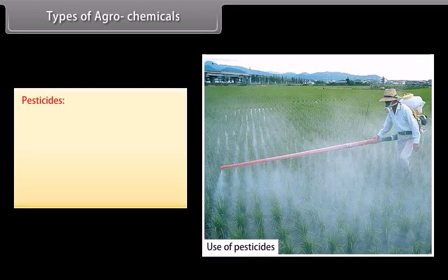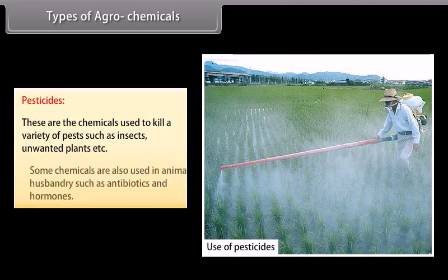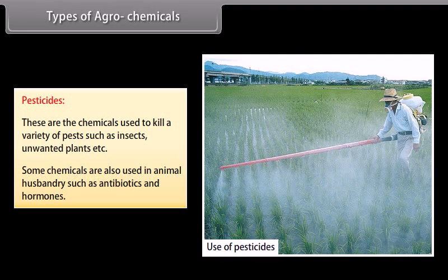Pesticides: these are chemicals used to kill a variety of pests such as insects, unwanted plants, etc. Some chemicals are also used in animal husbandry, such as antibiotics and hormones.